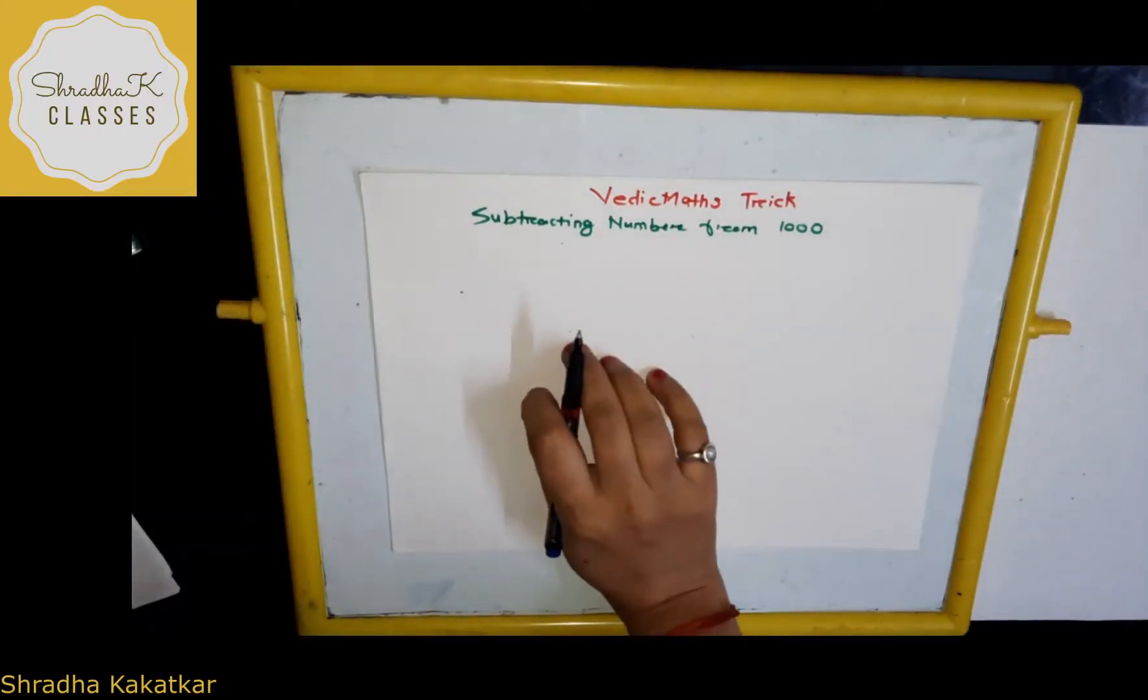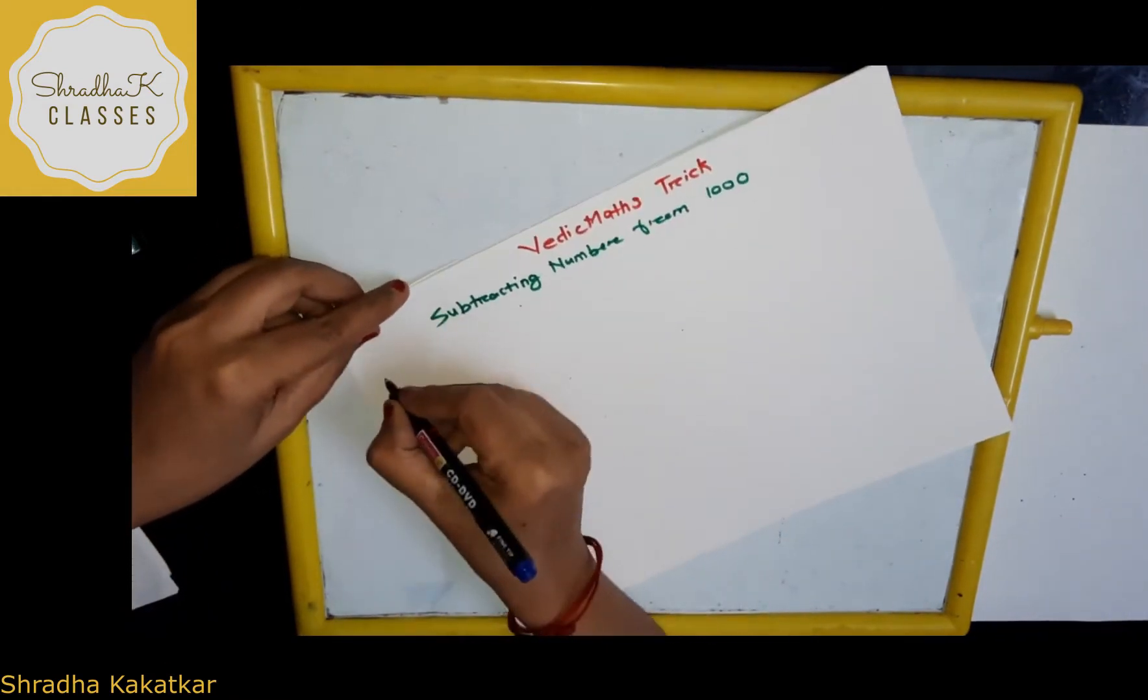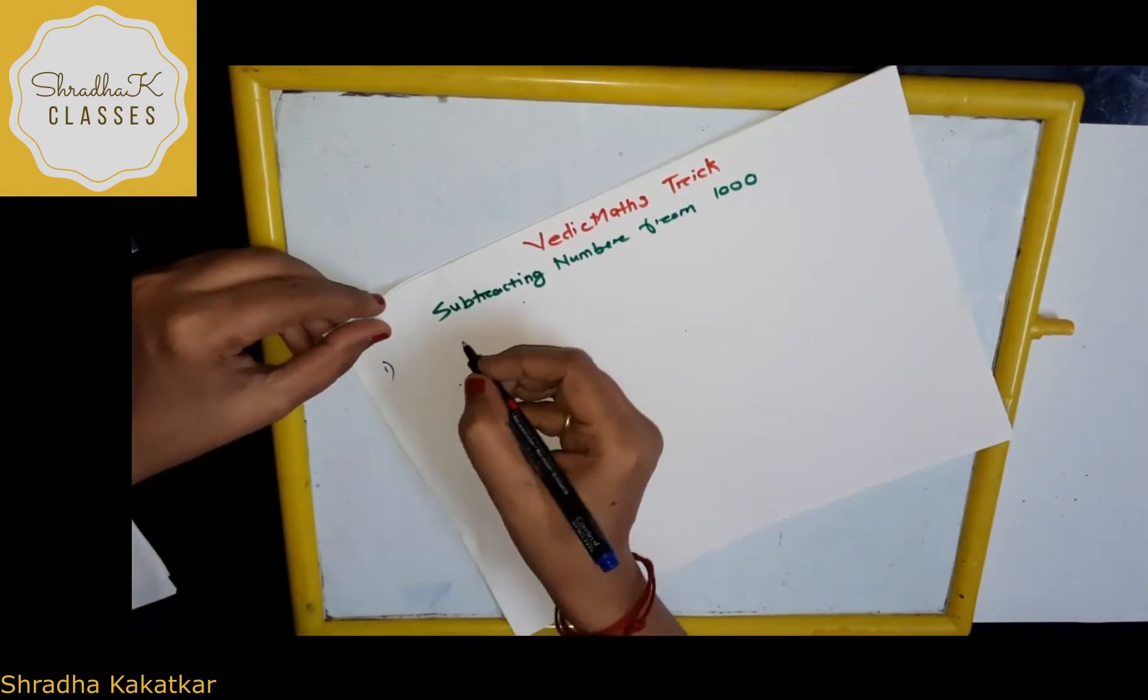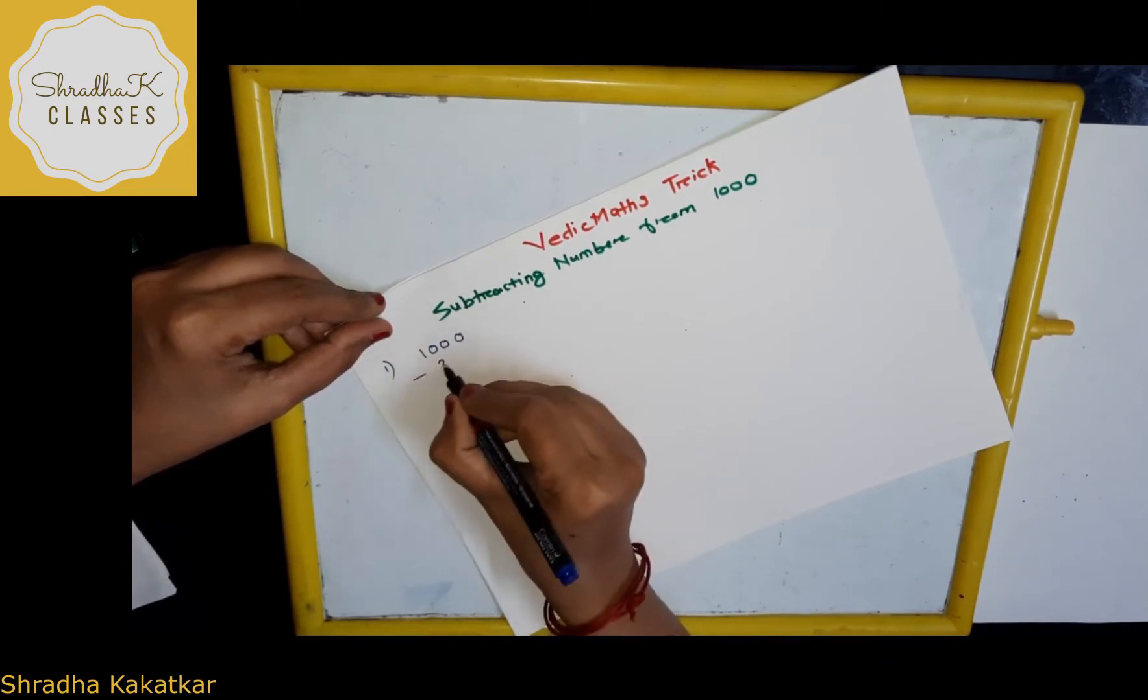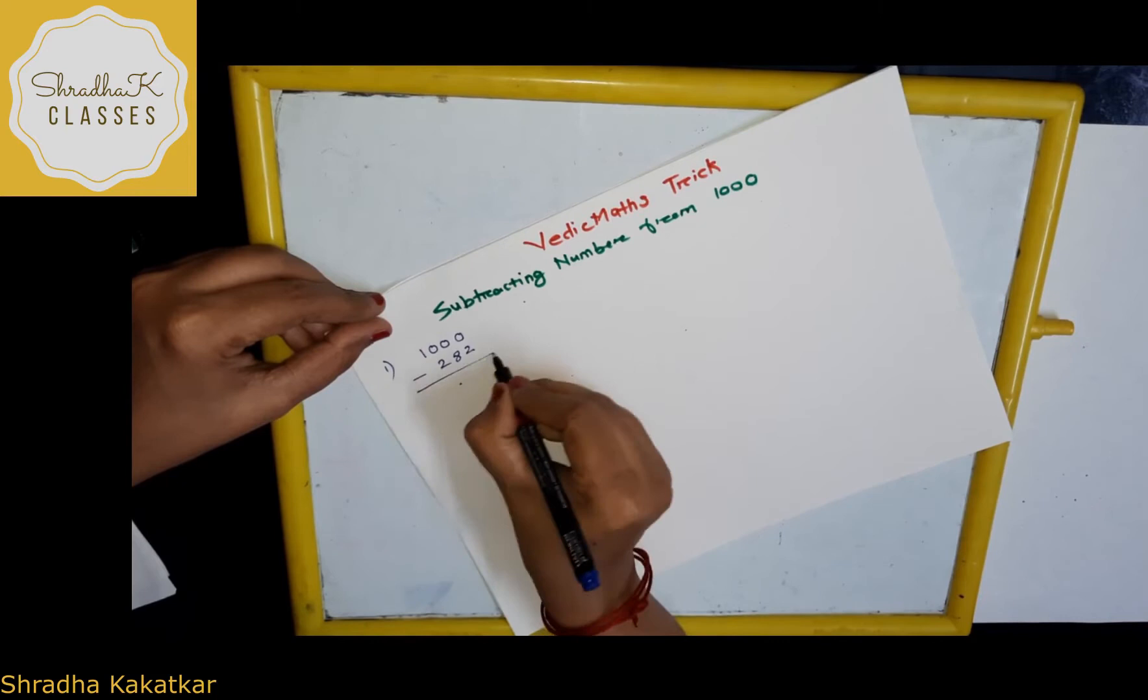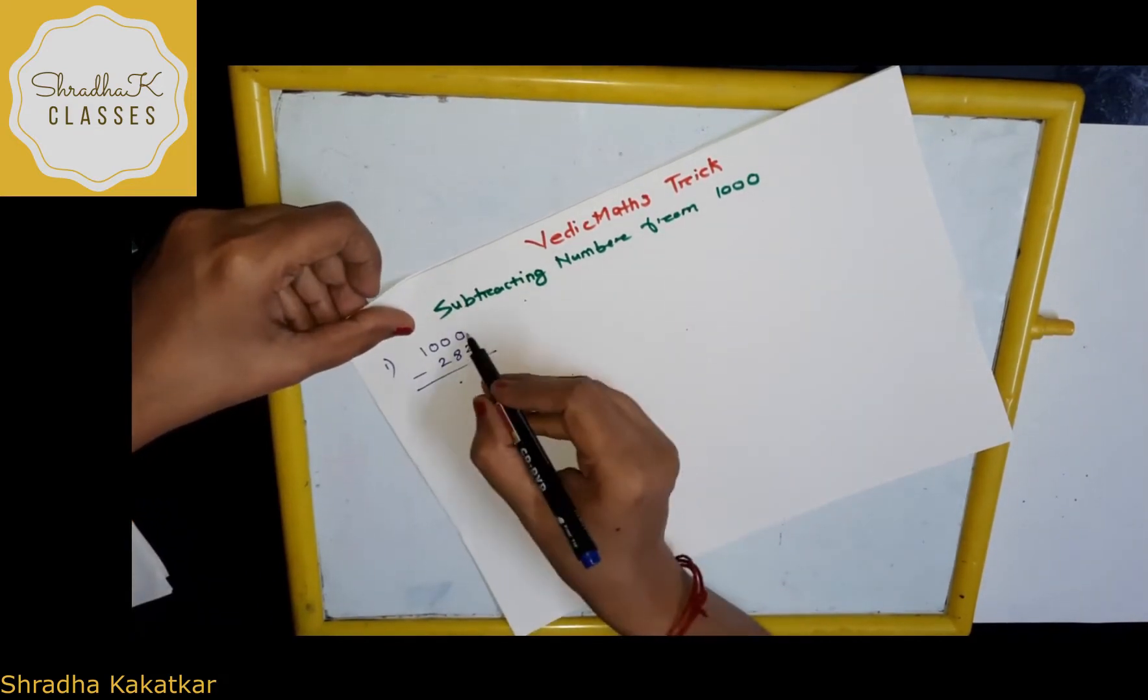Hello, let's learn to subtract a number from 1000. Let's take a number, let's take 1000 minus 282. Now, how we will do it in a simple way. So, what you do first?